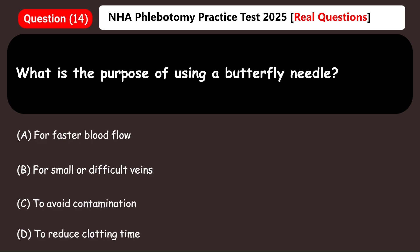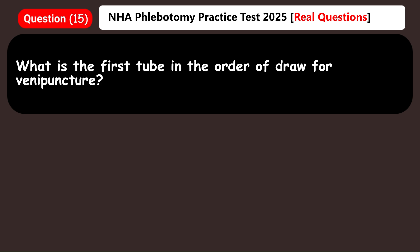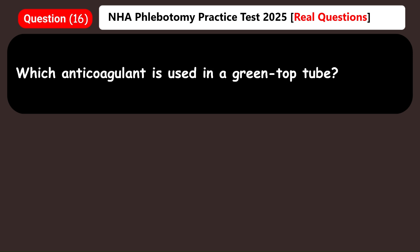What is the purpose of using a butterfly needle? A) For faster blood flow, B) For small or difficult veins, C) To avoid contamination, D) To reduce clotting time. Answer: B) For small or difficult veins. What is the first tube in the order of draw for venipuncture? A) Lavender, B) Blue, C) Blood culture bottles, D) Red. Answer: C) Blood culture bottles.